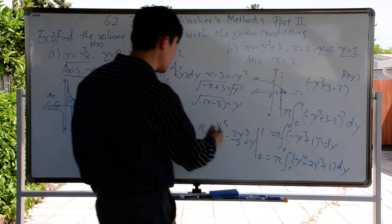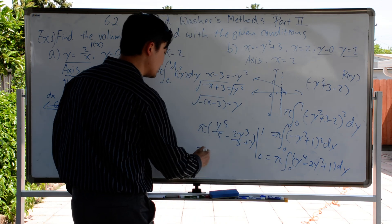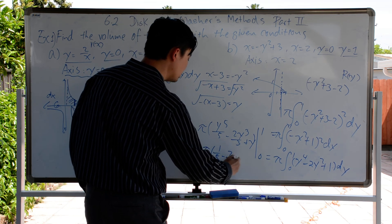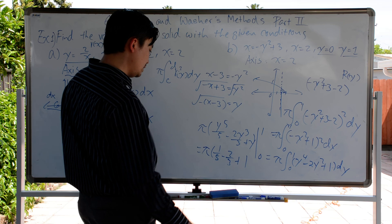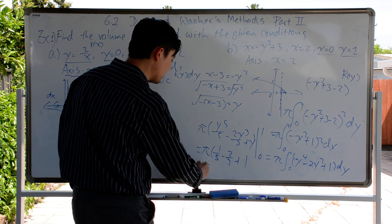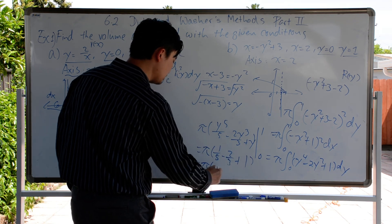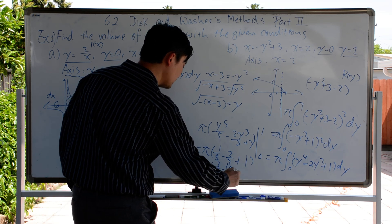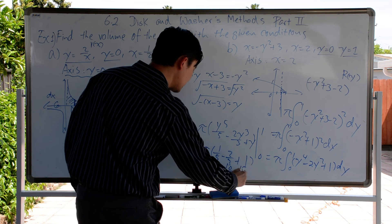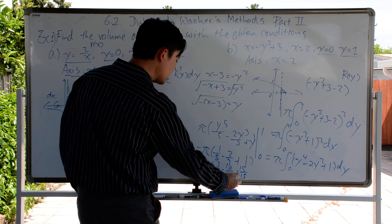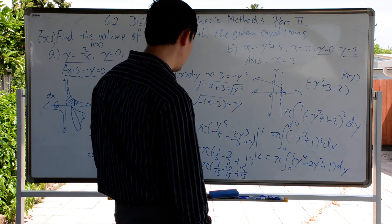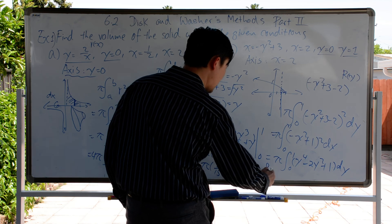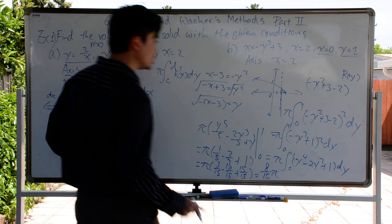Plugging in 0, everything turns out to be 0. So we just plug in 1: 1/5 minus 2/3 plus 1. Converting to the same denominator of 15: that's 3/15 minus 10/15 plus 15/15. So negative 10/15 plus 15/15 gives 5/15, plus 3/15. So it's 8 over 15 times pi, and that's the volume.